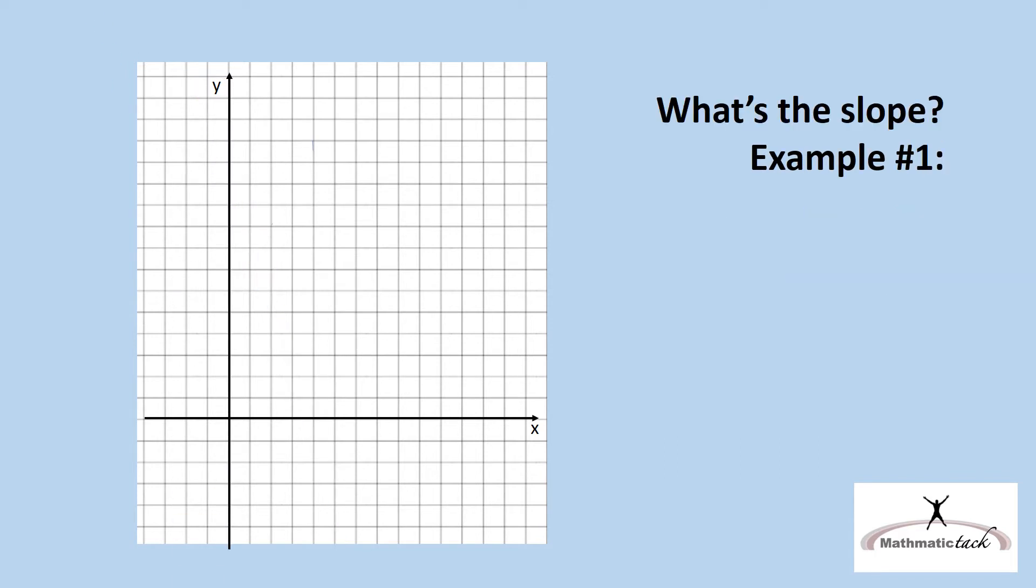So what's the slope? For the straight line y equals x minus 4, we know the y-intercept is negative 4. But what is the slope? The slope is 1, because when x is shown alone in the equation, it is the same as writing 1x.